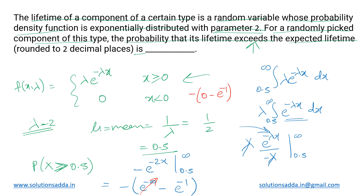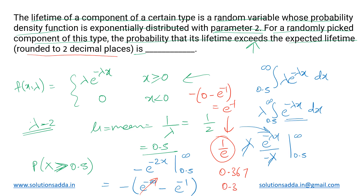This simplifies to e raised to minus 1, which is 1 divided by e. Substituting the value of e, we get 0.367. Since we want the result rounded to two decimal places, the final answer is 0.37.